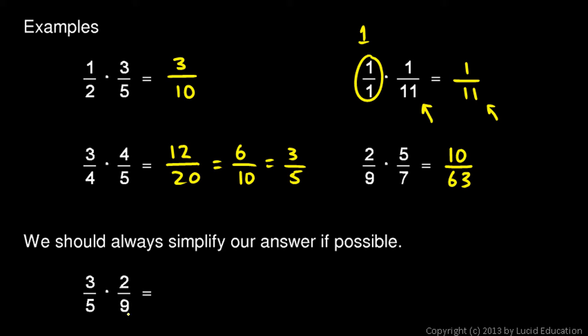So in this example, 3 fifths times 2 ninths. 3 times 2 is 6. And 9 times 5 is 45. And both of these numbers are divisible by 3. So 6 divided by 3 is 2. And 45 divided by 3 is 15. So 2 fifteenths is the answer.